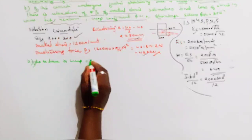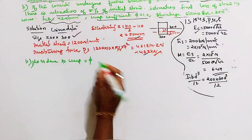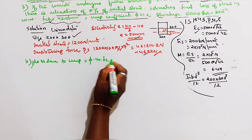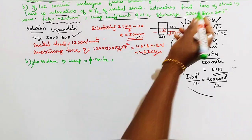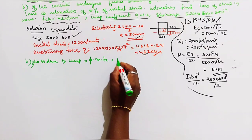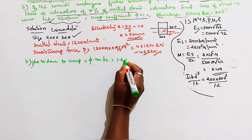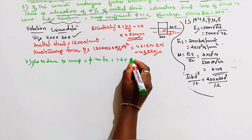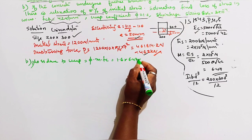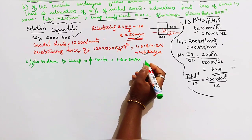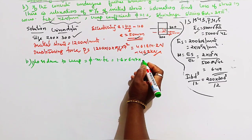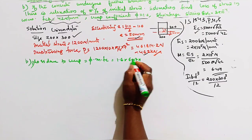For Question B, first equation: loss due to creep = creep coefficient × m × fc. Creep coefficient from question = 1.6, m = 6.47. We need to find new fc separately.